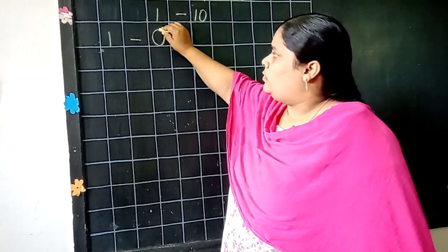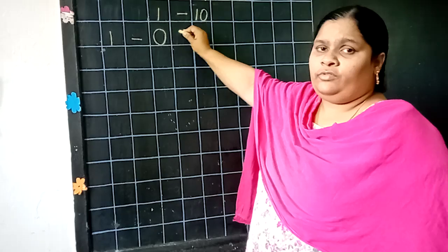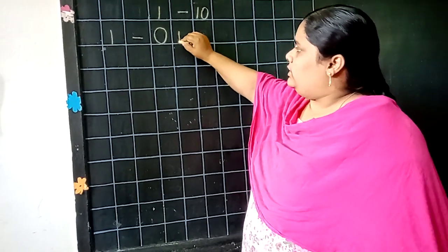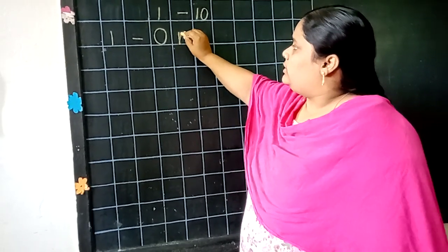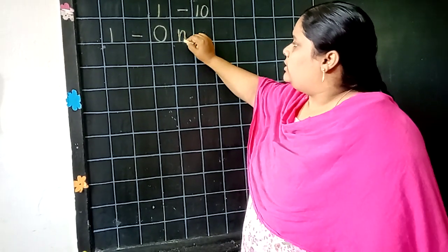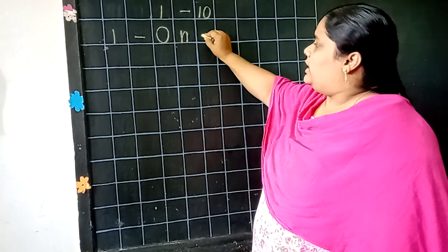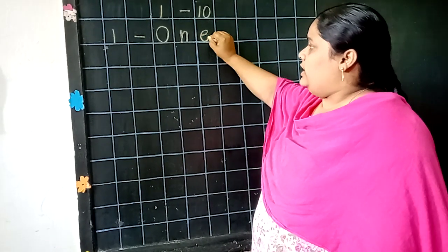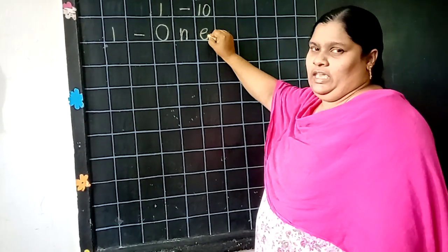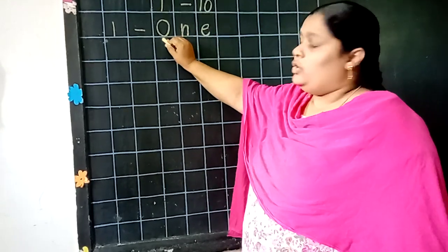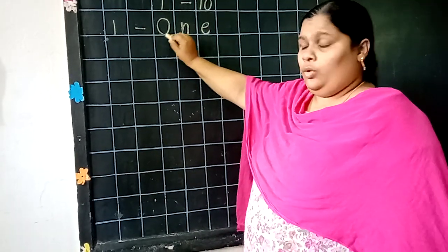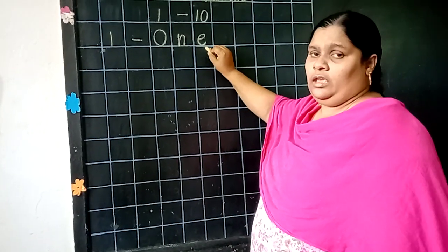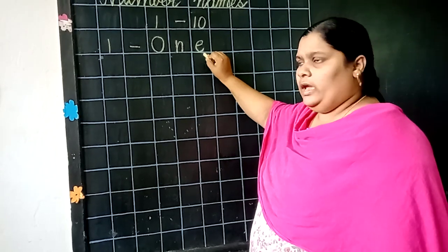Repeat after me, children. O. L. Very good. And what is this? E. What is the spelling of one? O, N, E. 1.